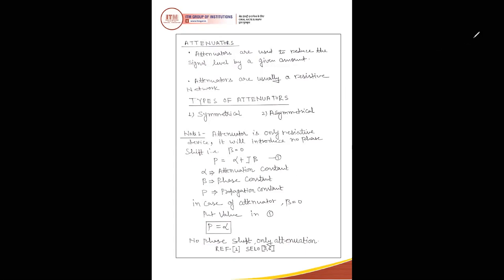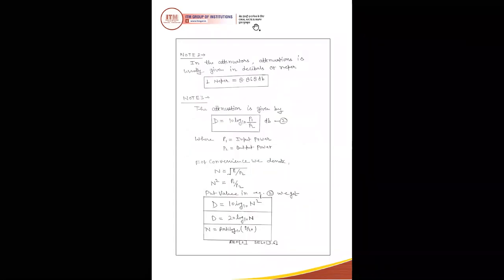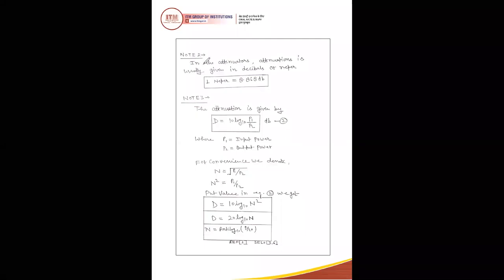Note point number two: in an attenuator, attenuation is usually given in dB or Neper. The relation between dB and Neper is: 1 Neper = 8.868 dB. This relation is used during numericals — if the answer is in the form of dB or Neper, we can easily convert using this relation.